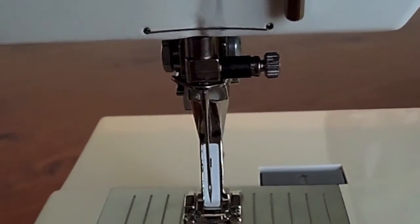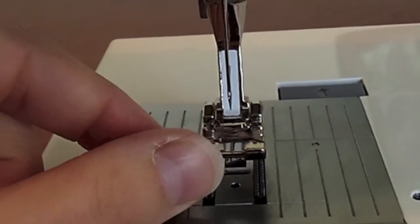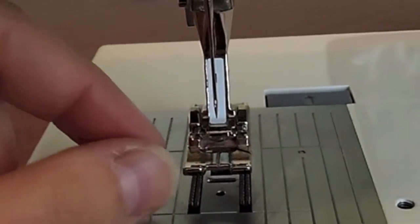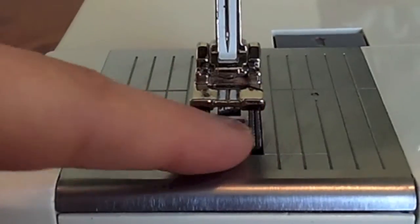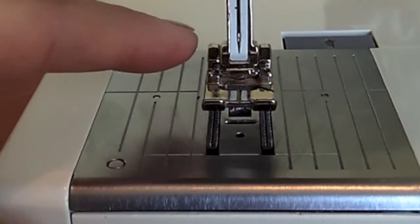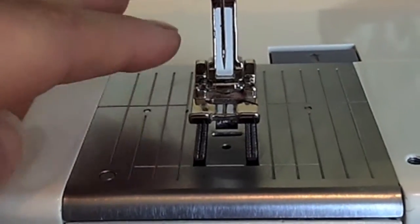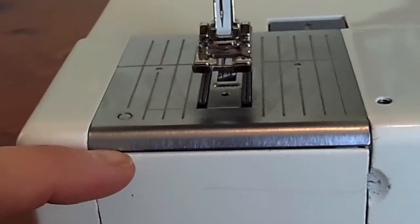You've got your sewing foot here, so this is interchangeable depending on what type of sewing project you're doing. And here you've got your feed dogs, so these will move along as you're sewing and that will help pull your fabric through the sewing machine.